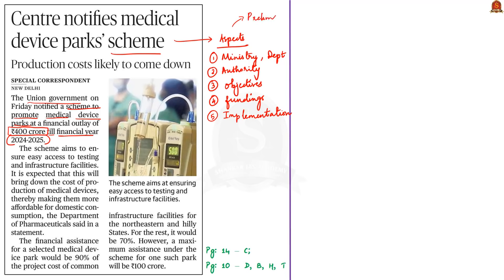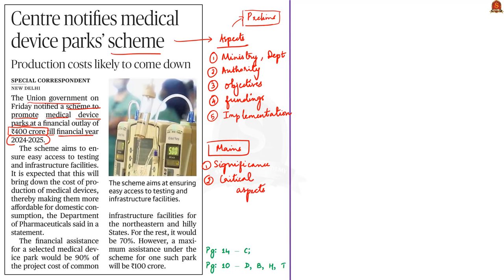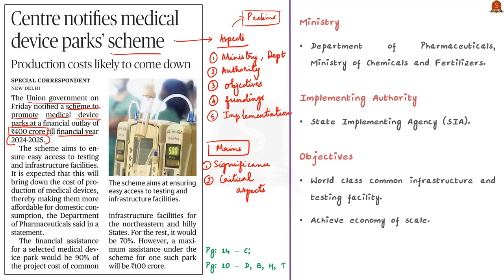These aspects are important for your preliminary examination. For the mains examination, you need to cover the significance of the scheme, analyze it, and bring out critical aspects. Since this is a newly launched scheme, let us wait for more time before getting into the critical part. For now, with the available details, we will focus mainly on the preliminary aspects.